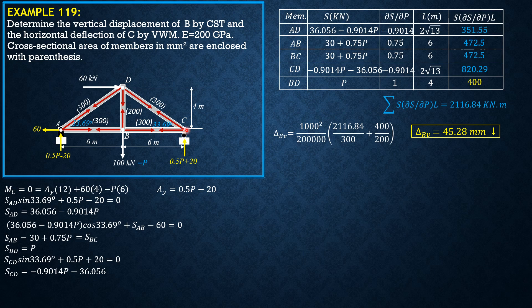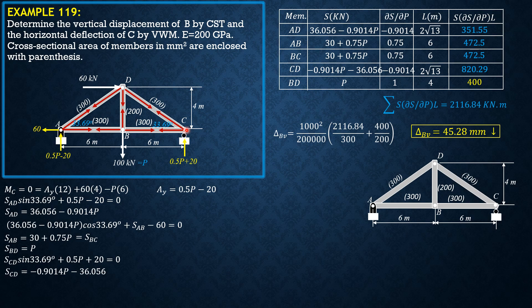For the horizontal displacement at C, we apply a unit rightward load of 1.